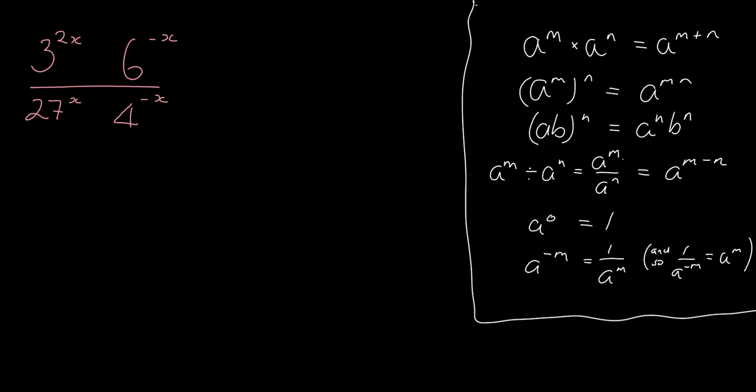So what we need to do is work to get everything in the same base. And you should notice that 27 is just a power of 3 and 4 is just a power of 2 and 6 is made up of 2 times 3. So that's what we're going to go ahead and do in order to simplify. We're going to try and write everything in terms of the same base.